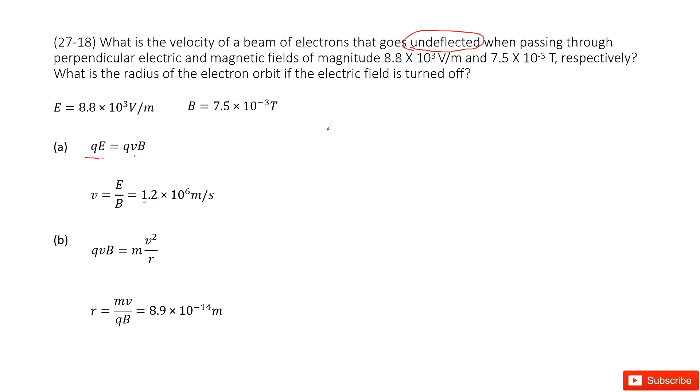Then it asks you what is the radius for electrons in circular motion if the electric field is turned off. Now the electric field is turned off, so only the magnetic field survives.